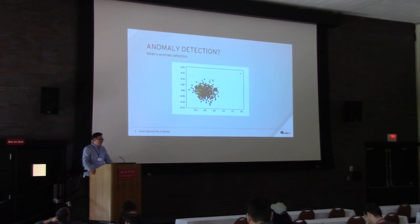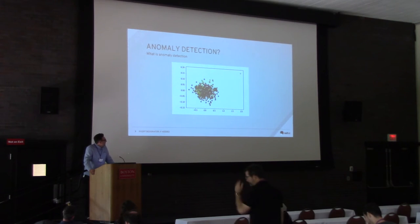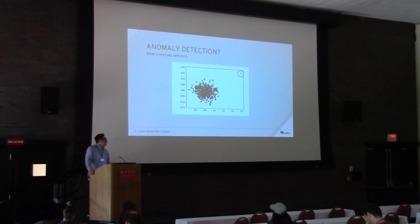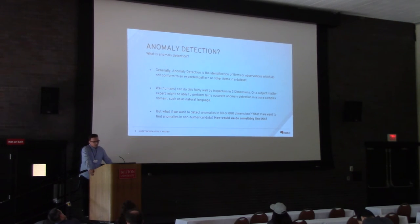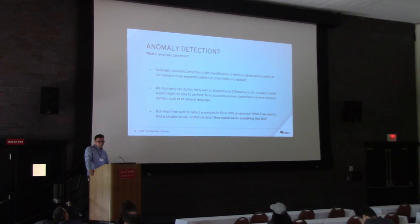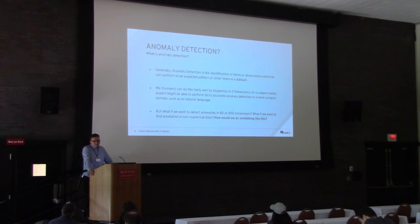To give a quick summary of what anomaly detection is: here we have a data set of some points in two dimensions, and in the far corner there's an anomalous data point — it just doesn't fit with the rest. Humans are very capable of this task in two or three dimensions, or even subject matter experts in a specific domain. For example, given a data set of green, red, blue, and chair, English speakers can notice that 'chair' is the anomalous data point. But once you start dealing with high-dimensional log data in natural language — 80 or 100 different dimensions, or data that's not numerically based at all — how do you get a computer to figure out what an anomaly is?